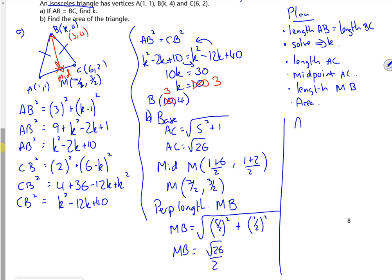So the last bit is the area. So I've got a triangle which is root 26 long, root 26 over 2 high. So the area is a half times base times height. And it gives me an area of 13 over 2 units squared. There you go.